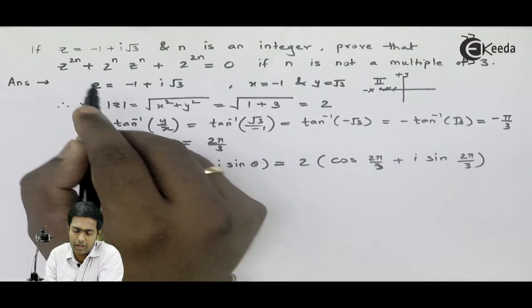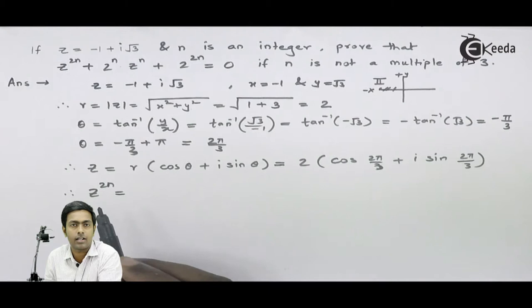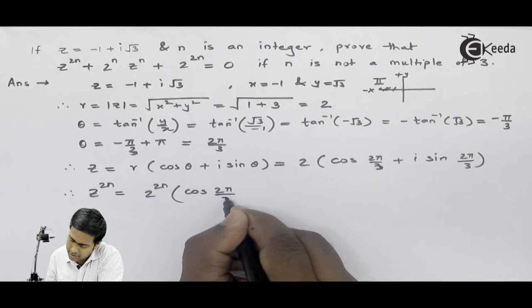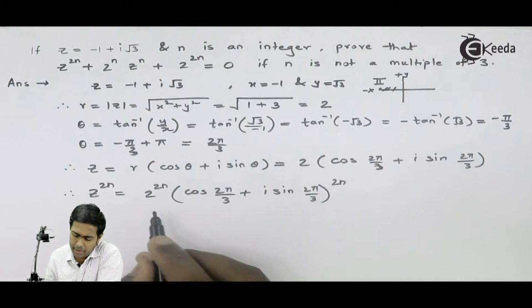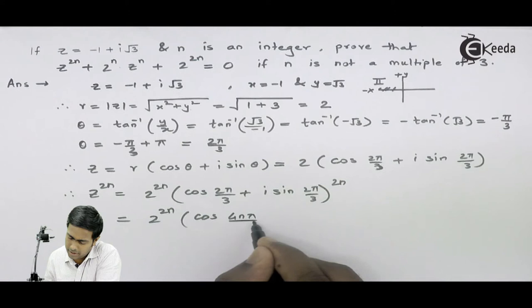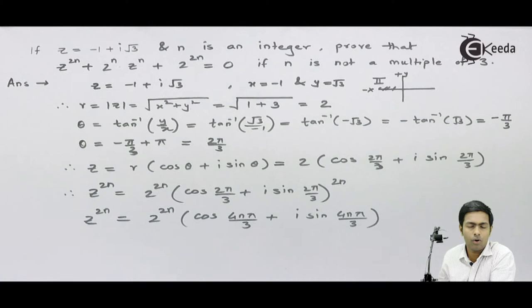Now we start finding the terms. In the LHS we have three terms. The first term is z raised to 2n. Taking the 2n power of z in polar form, it becomes 2 raised to 2n times (cos 2 pi by 3 plus i sine 2 pi by 3) whole raised to 2n. Applying De Moivre's theorem, we get 2 raised to 2n times (cos 4n pi by 3 plus i sine 4n pi by 3). This is the value of the first term.